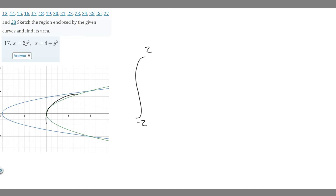So we write that one first: 4 + y². Then subtract the other function, the one to the left, which is 2y². So we have (4 + y² - 2y²) dy.